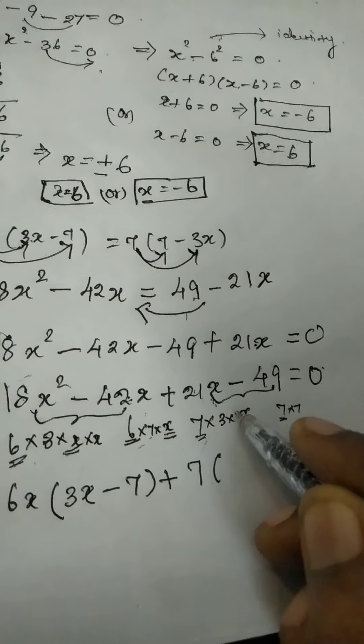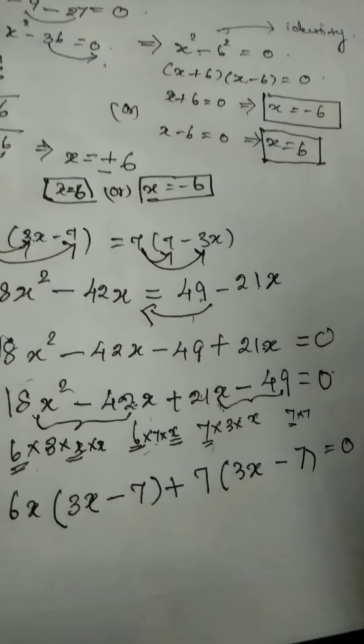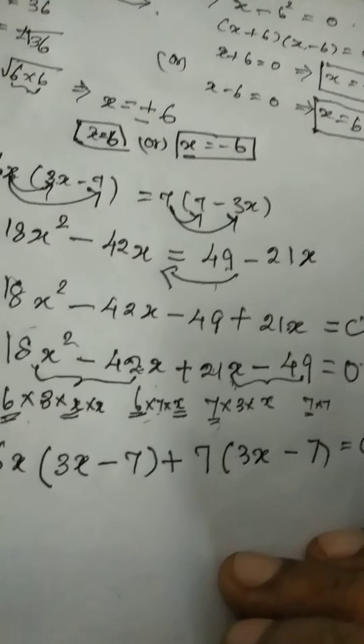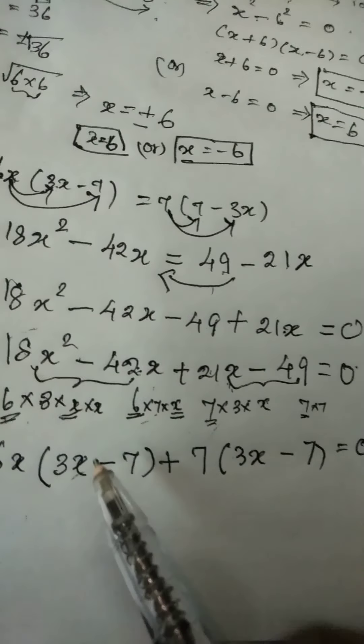Now you see what is common? 7 is common. Take 7 commonly outside. So if you are taking commonly 7 outside what is remaining 3x minus here 1, 7 is remaining.